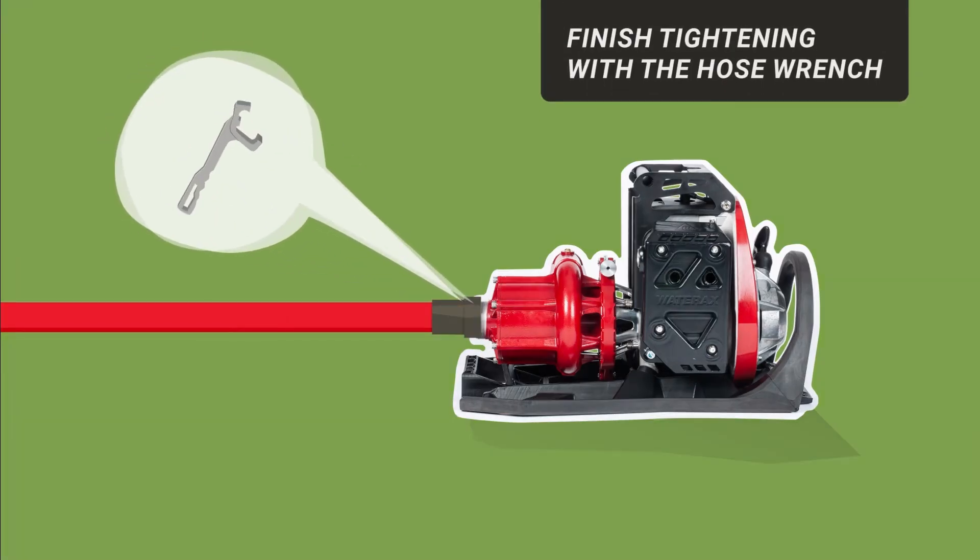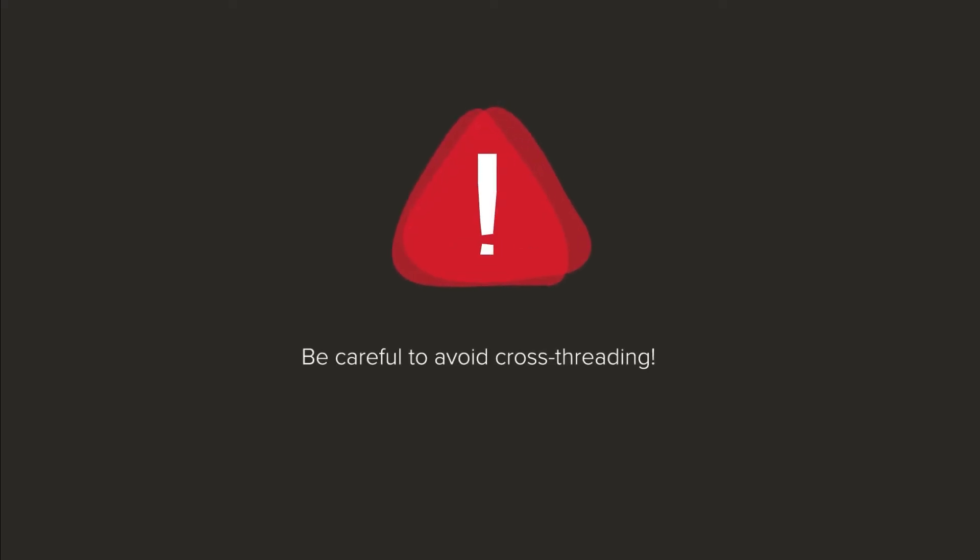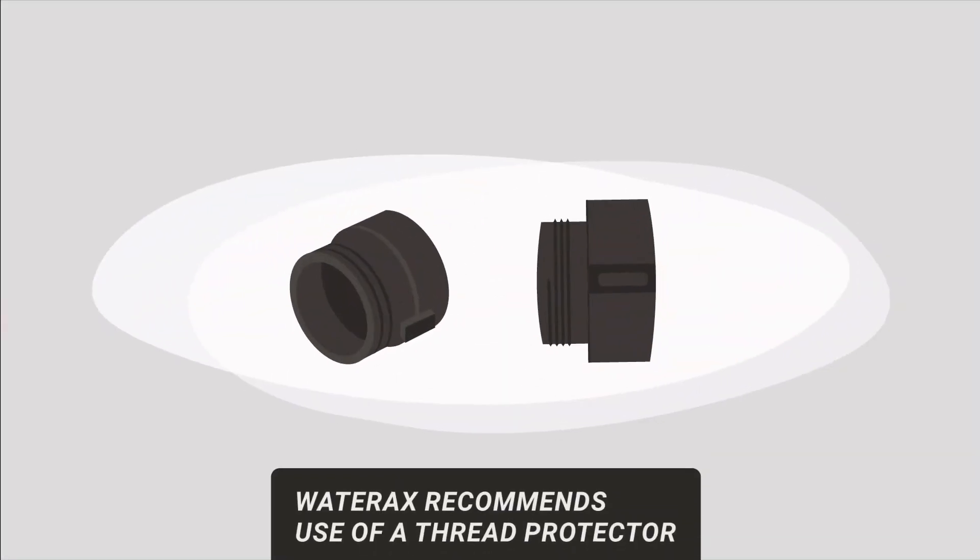Finish tightening with the hose wrench to prevent any air leaks. Cross threading can damage the connection and create air leaks that lead to air locks and potential pump end seizure. Wateraxe recommends the use of a thread protector to protect the pump end threads against any damage.